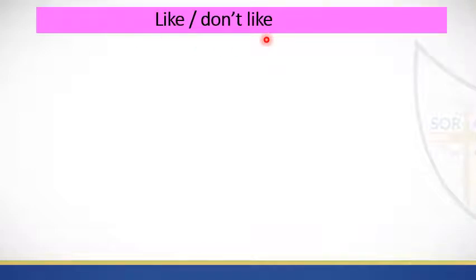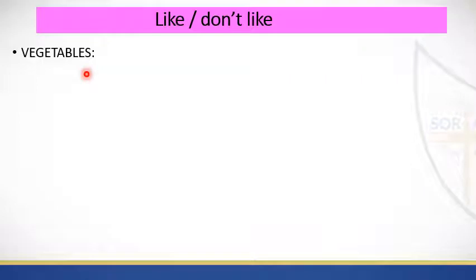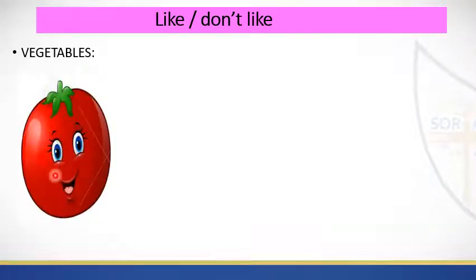Like, don't like. First, we're gonna work with vegetables. Remember that on Monday we worked on foods — healthy foods. Within healthy foods we also have vegetables and fruit. Before creating sentences with like and don't like, we're gonna learn vegetables first. What is this one? This is a tomato.